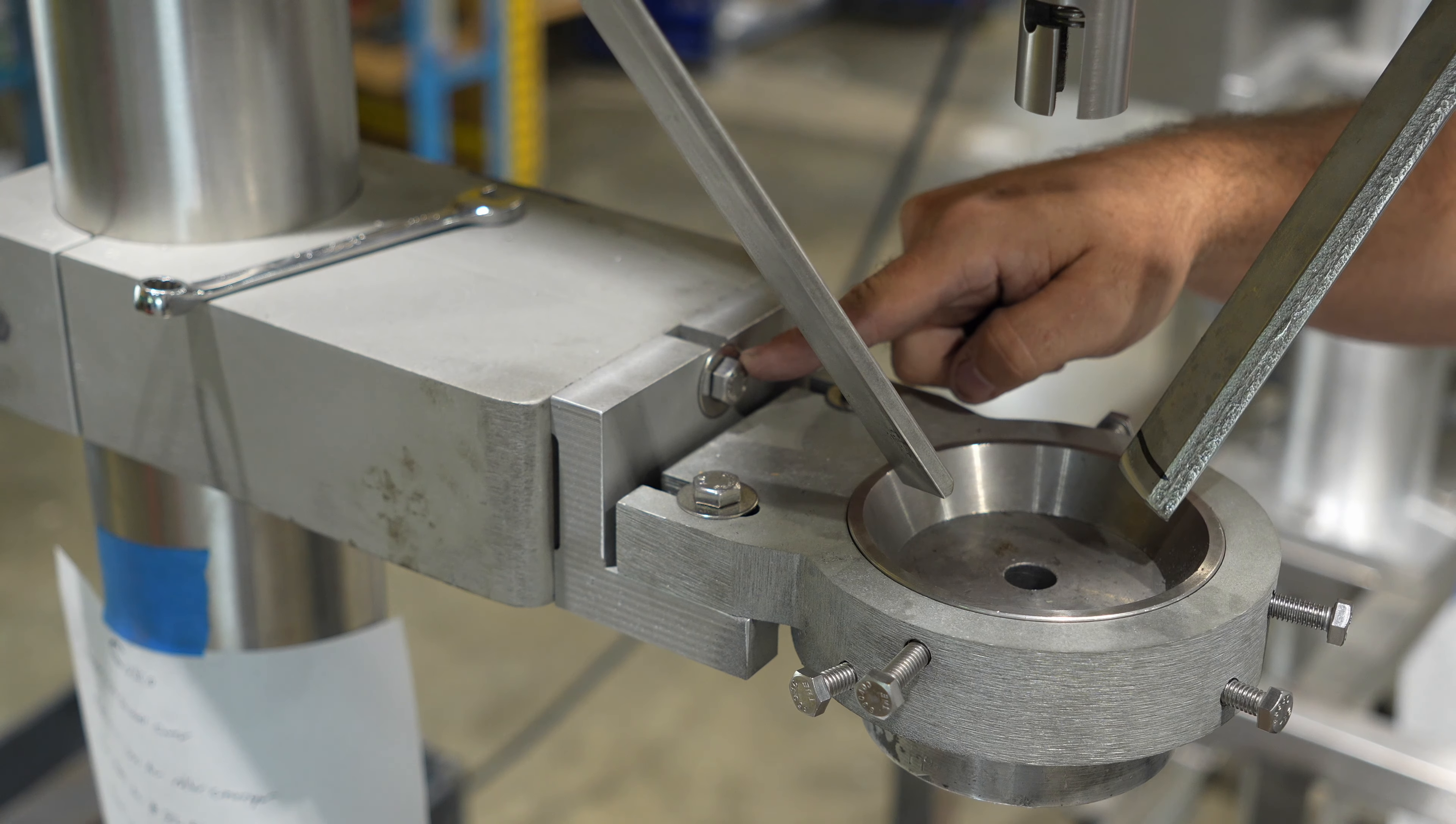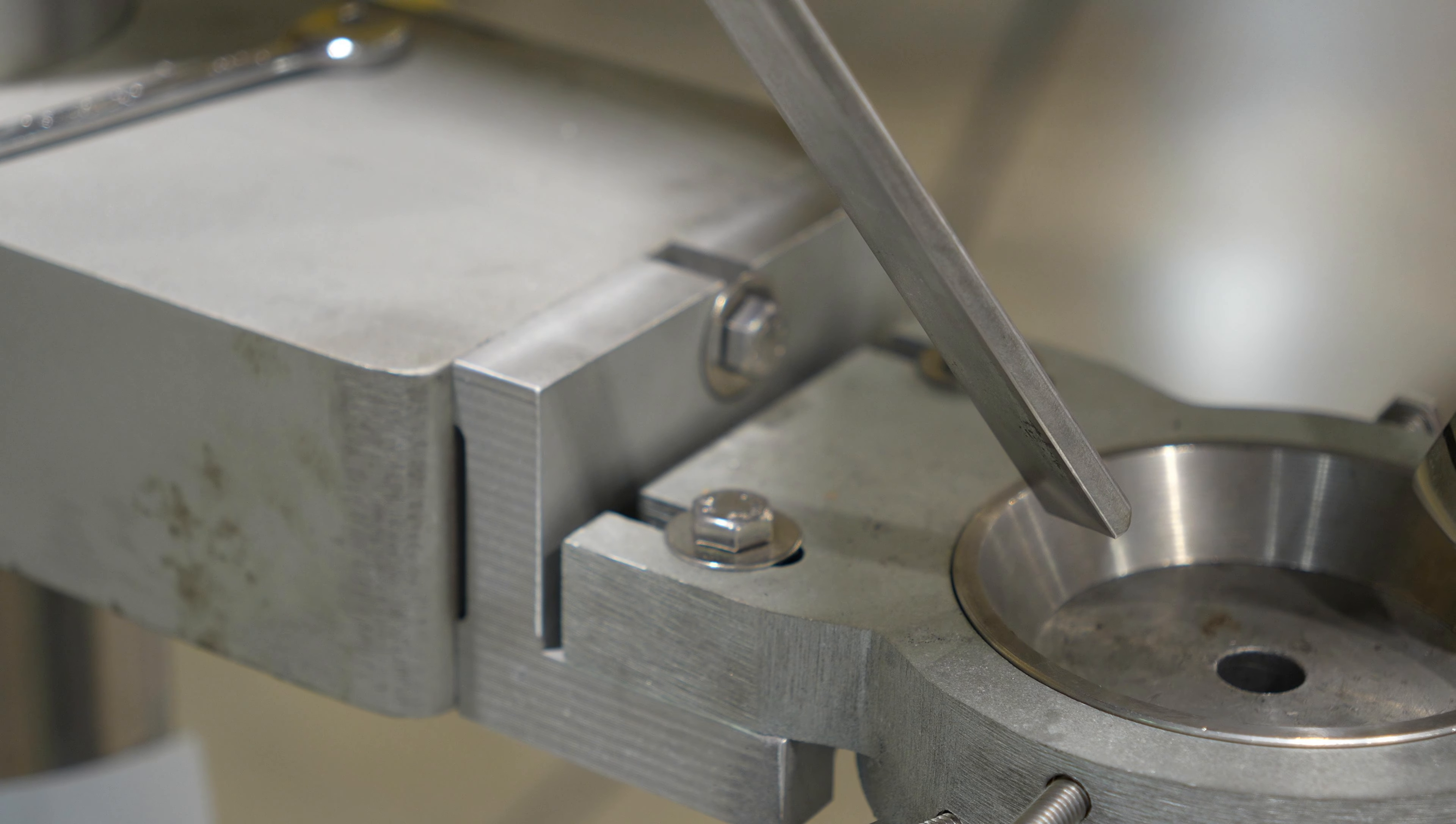Whenever cleaning your hopper, only loosen the one horizontal bolt on the coupling. The two vertical bolts should not be adjusted unless your auger is out of alignment.